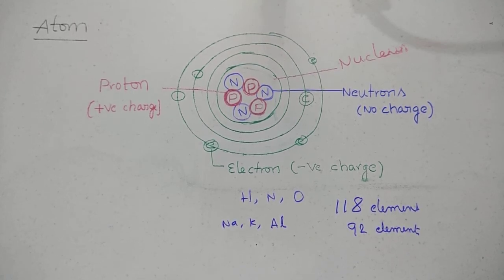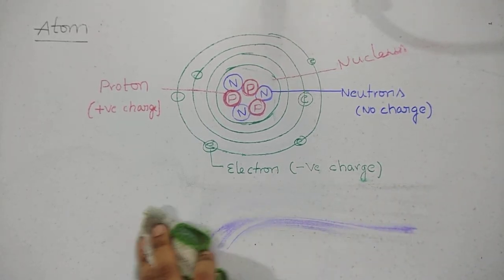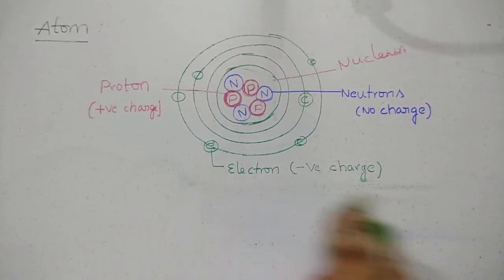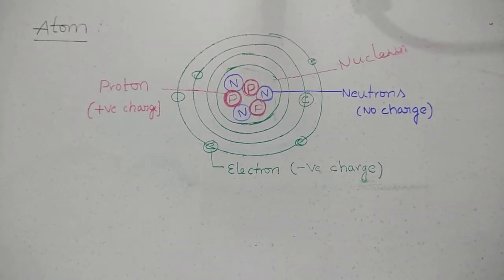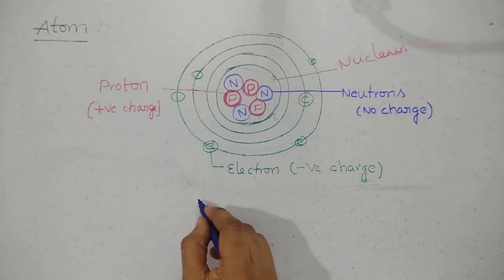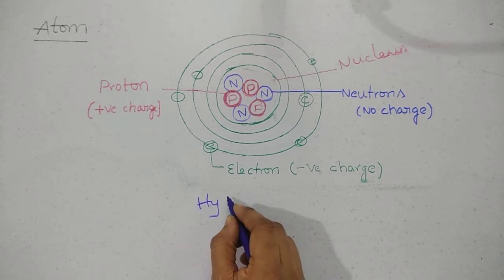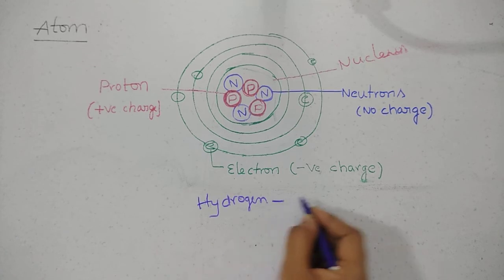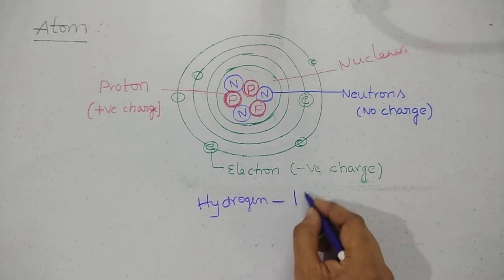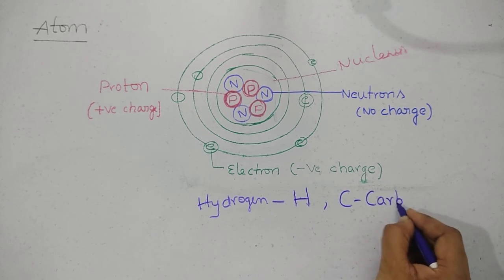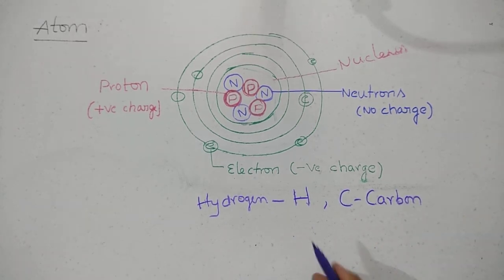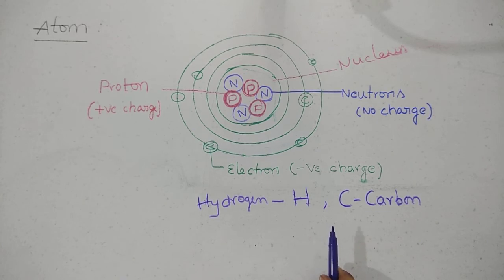We have to symbolize every element. The symbols for elements, maximum use common scientist name or Latin name, like hydrogen is represented as H, carbon is C. So if you use a periodic table, you can use a single letter or double letters.